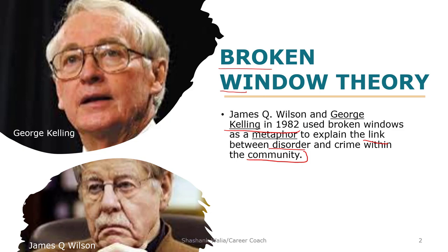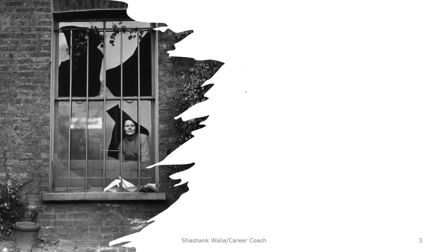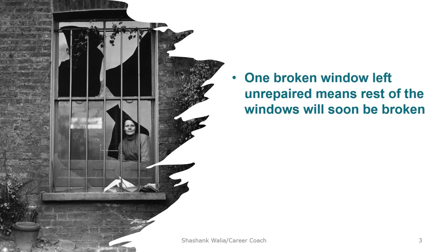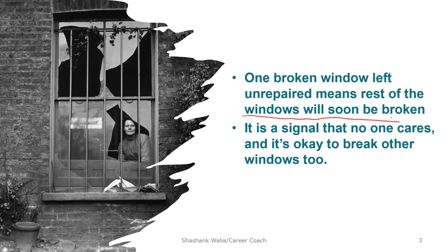The broken window theory is a kind of metaphor to explain the link between disorders and crime. When you say there is a broken window — for example, in your locality when there is a vacant house, people will try to break in and steal things. If one window is broken, the other windows will also be broken one by one. A broken window left unrepaired signals that no one cares, and it's okay to break more windows.